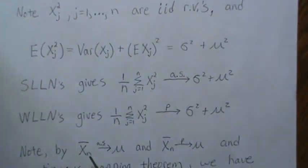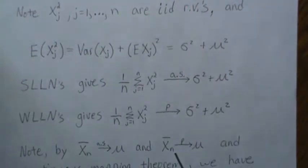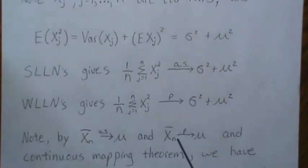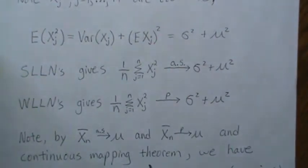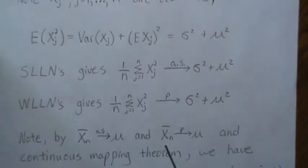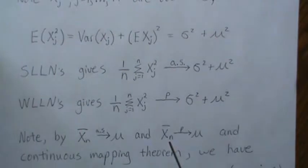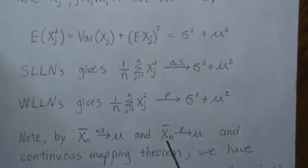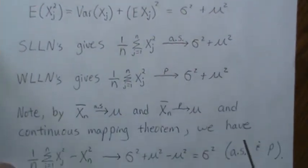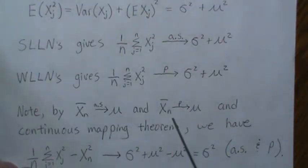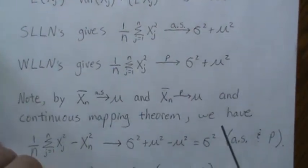Note that X̄ converges almost surely to μ, and also converges in probability to μ — that's by the strong and weak laws of large numbers. By the continuous mapping theorem, if you take a continuous function of these variables it also converges in probability. So X̄² converges to μ².